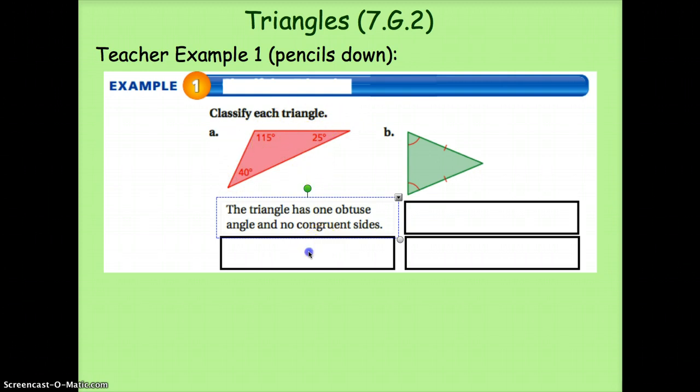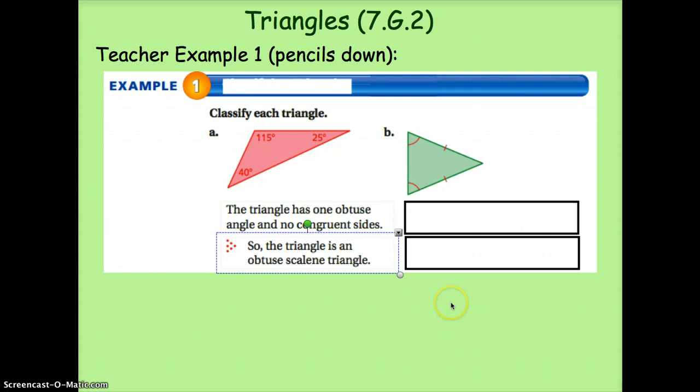So therefore, it is an obtuse scalene triangle. Obtuse representing the obtuse angle and scalene because there are no congruent sides.